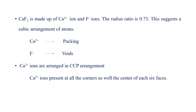The formula for calcium fluoride is CaF₂, which is made up of Ca²⁺ ions and F⁻ ions. The radius ratio of Ca²⁺ to F⁻ is 0.73. When the radius ratio is between 0.73 and 1, it suggests a cubic arrangement of atoms, meaning calcium fluoride has a cubic structure.